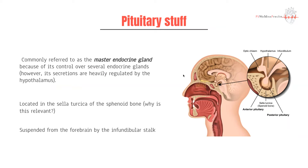The pituitary is located within the sphenoid bone, in this tiny sac called the sella turcica. This is relevant because when we talk about operating on the pituitary — whether for masses, adenomas, cysts, or whatever — we often adopt a trans-sphenoidal approach where we go up through the nose, through the sphenoid bone, into the sella turcica. We'll also discuss what happens when a pituitary adenoma or mass compresses on surrounding structures.